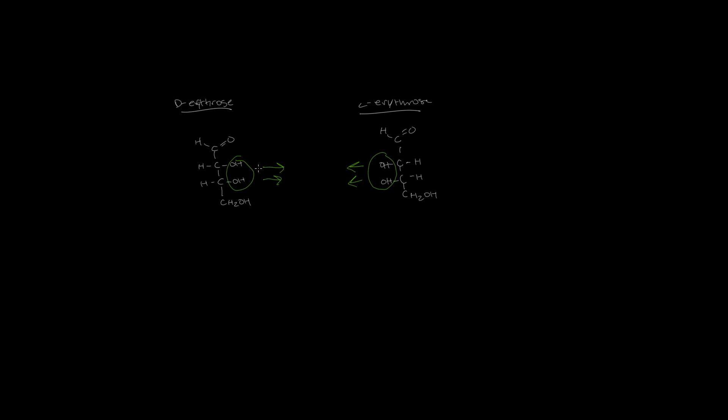We can also see that these sugars are aldoses because they have an aldehyde group — a carbonyl group with a hydrogen attached to the carbon, and then an R variable group. To name sugars, we basically have to look at whether it's an aldose or ketose, as well as the number of carbons it has — like triose, pentose, or hexose.